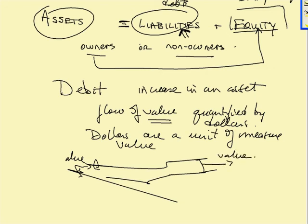And when we take value from something, we record that transaction as a credit. We call it a credit. And when value comes out the other end, we record it or call it a debit.